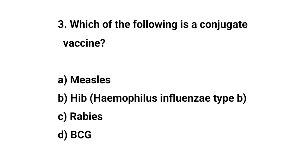Question number 3. Which of the following is a conjugate vaccine? The right answer is B: Haemophilus influenzae type B.